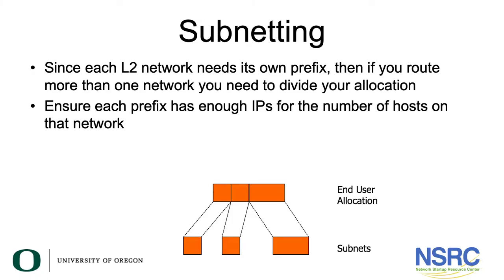Subnetting is dividing a network into two or more subnetworks. Each L2 network needs its own prefix. If you need to route more than one network, then you need to divide your prefix allocation. The rule is basically to ensure that each prefix has enough IPs for the number of hosts on that network.